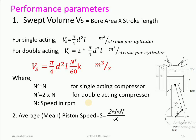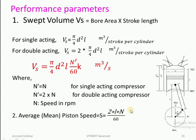In some problems, instead of cylinder dimensions L and D, the average or mean piston speed is given. Mean piston speed can be calculated by the formula 2LN/60. Here, L is the distance travelled by the piston in one stroke, so 2L is the distance in one complete cycle, and N/60 gives the number of cycles per second. This gives speed in meters per second — note this is the speed of the piston, not of the crankshaft.